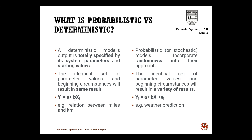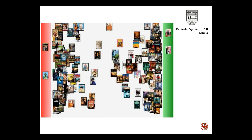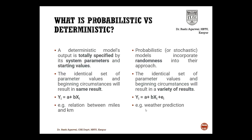For example, Yi = A + B·Xi. Wherever Xi is defined and A and B are fixed, I will land up with the same Yi. In a probabilistic model, the identical set of parameter values in the beginning will result in a variety of results. I may start with the same Xi, but due to the error term Yi, my output will change every time I run this probabilistic model. Even with Netflix, it may suggest one movie one time, and next time it makes another suggestion. So every time it iterates, it will give a different output.